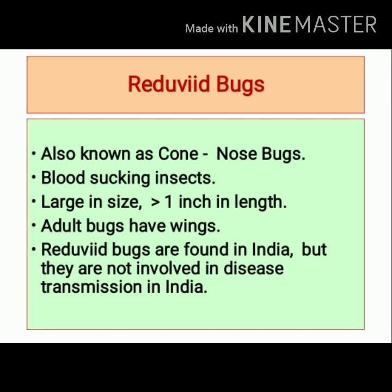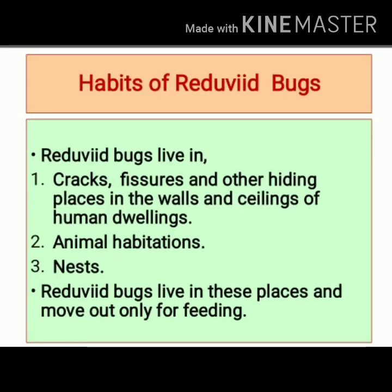Reduviid bugs are found in India, but in India they are not involved in the transmission of disease. These bugs live in cracks, fissures, or other hiding places present in the walls or ceilings of houses. They can also live in animal habitations and nests, moving out only for feeding purposes.